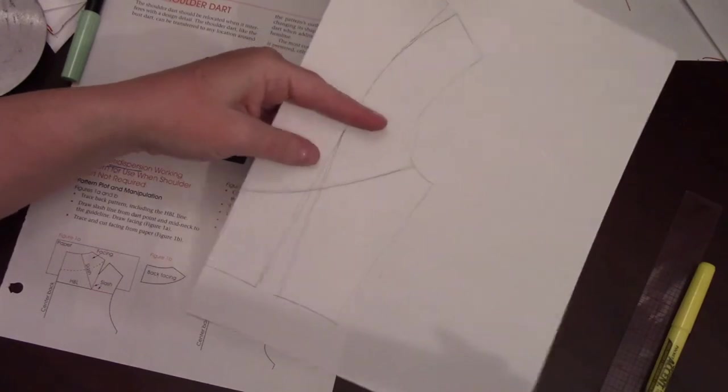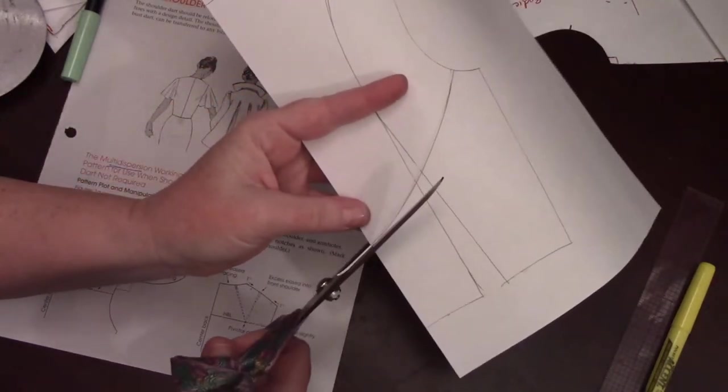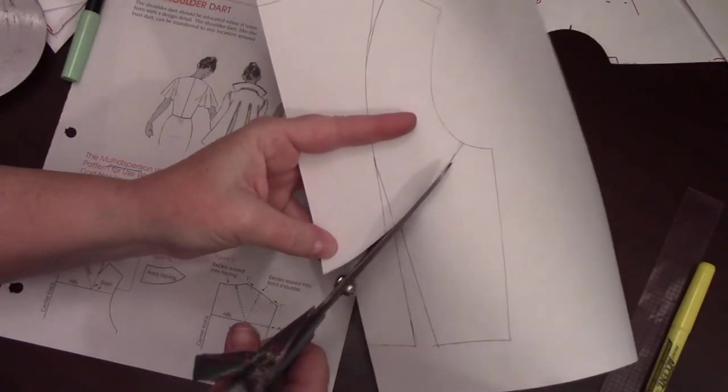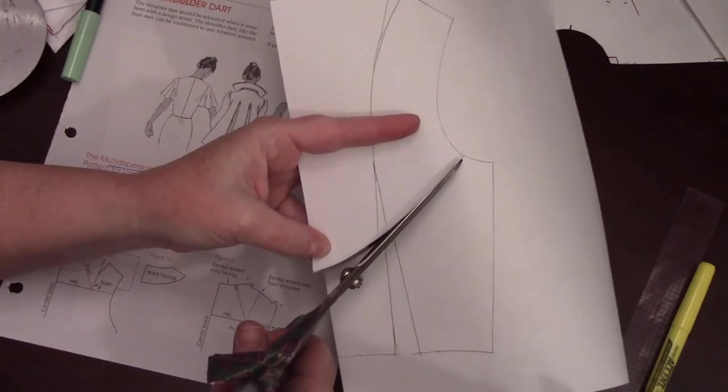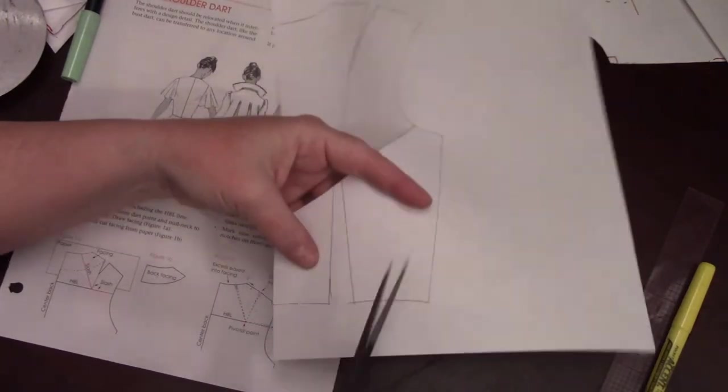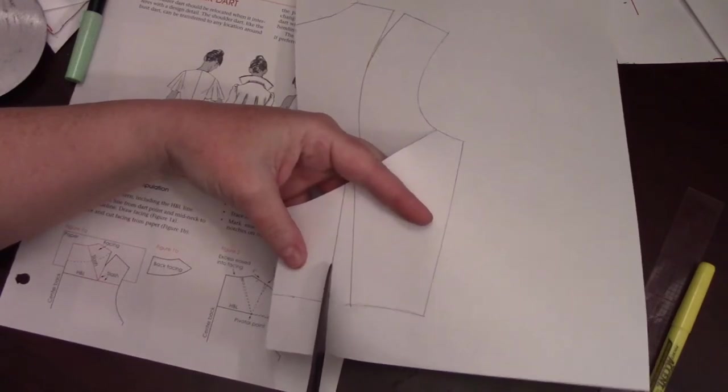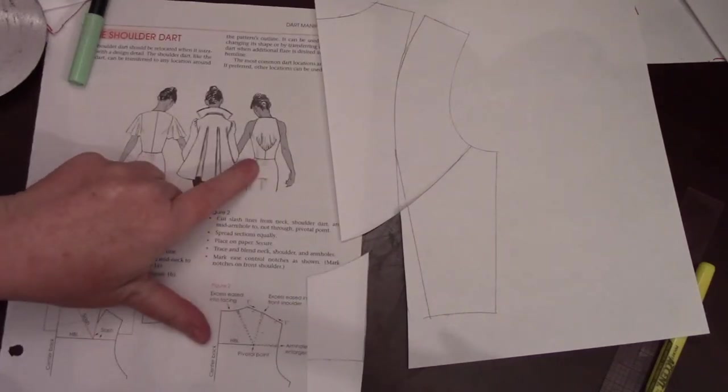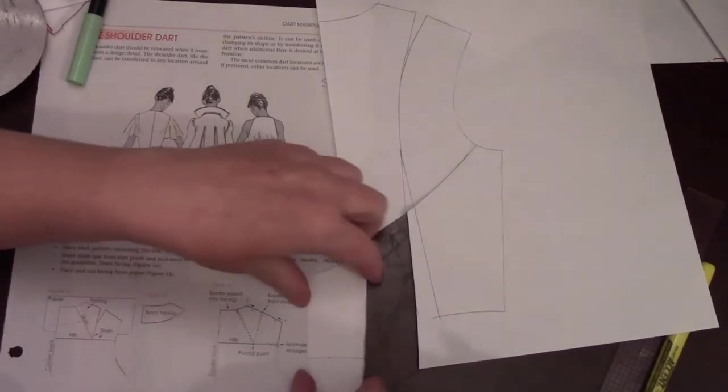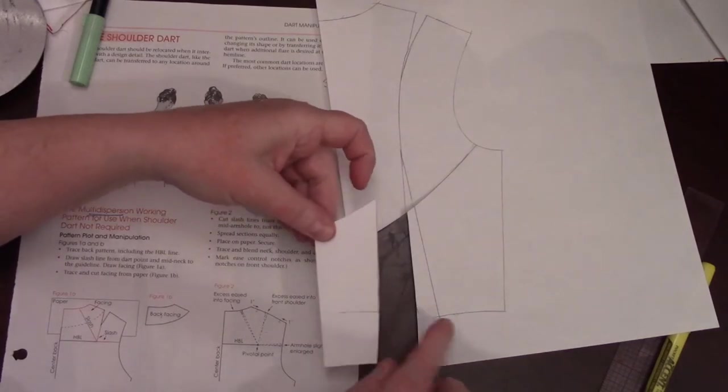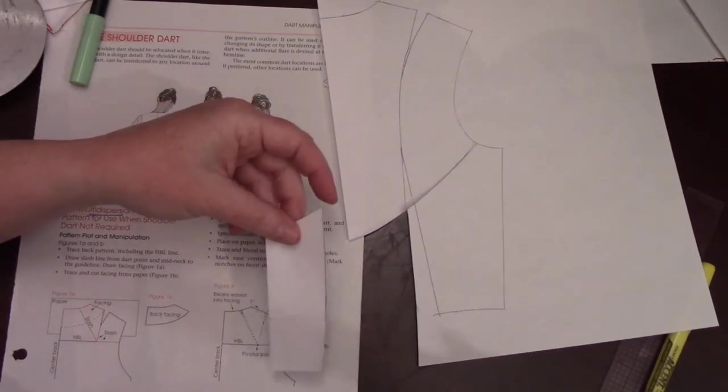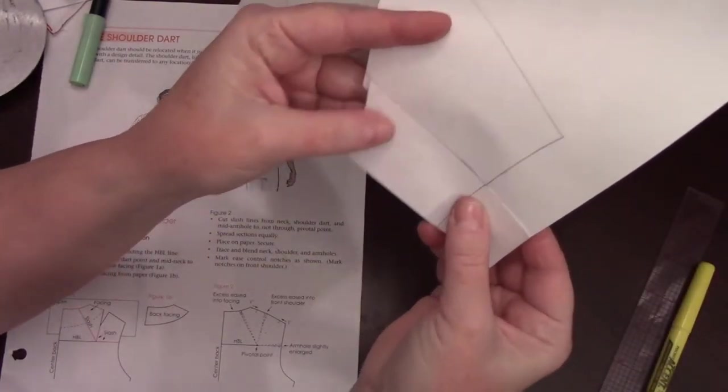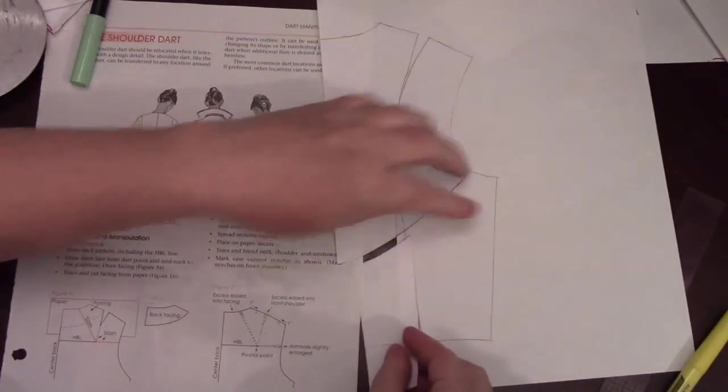And then this little piece, because there isn't a dart there, we're going to take this. Can you see that? I need to start doing things in color. I'm just going to take that and attach it so that the dart is closed.